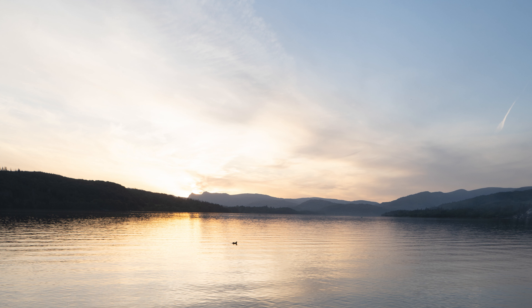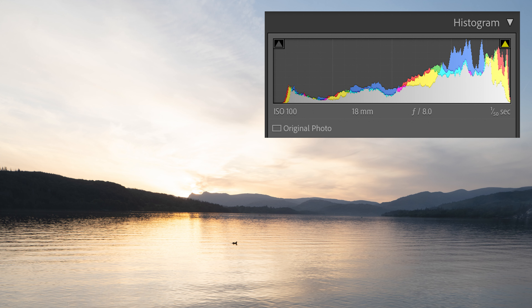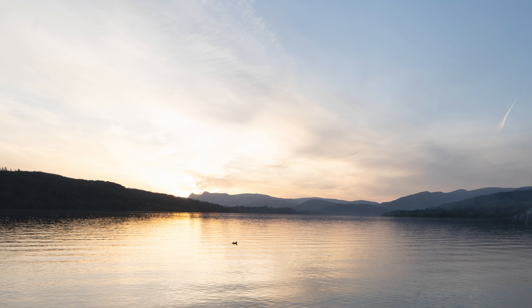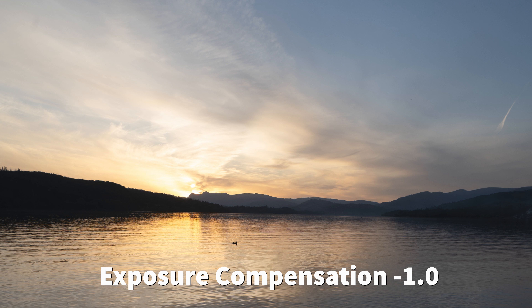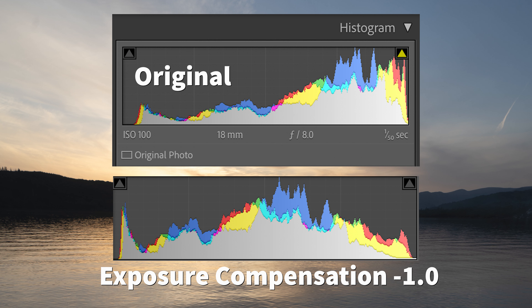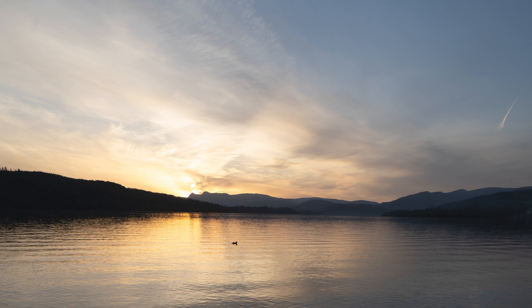We use exposure compensation creatively when we want a different look to our photos. A classic example is taking a picture of a sunset. Here you can see the camera has tried to make it mid-grey, with the histogram broadly spread across the middle. But what I really want to do is bring out the colours in the sky. If I apply some negative exposure compensation — at minus one stop — then we've started to develop some of the colours in the sky. Comparing the two histograms, I've moved the whole histogram over towards the blacks, to the left.